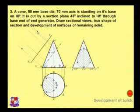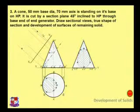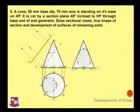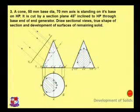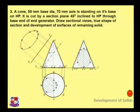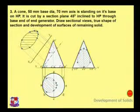To locate this point, measure the distance from the XY line to point e and put it over here. To locate point h, measure this distance and put it over here. Similarly, measure the distance from the XY line to each remaining point and place them accordingly.